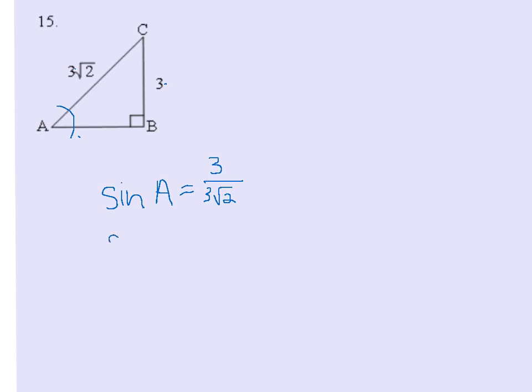If you wanted to simplify this, sine of A equals 1 over root 2. We've talked about not having a square root in the denominator, so this equals root 2 over 2.